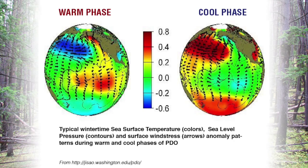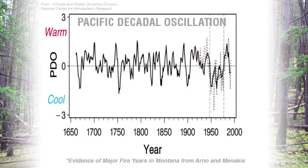Quite the opposite when we experience a cool phase: northern Pacific ocean temperatures are warm, which supports a high pressure system that circulates clockwise, drawing cold air down across Montana from Canada. If we look at Pacific Decadal Oscillation and its influence on our forests, here's a graph showing the last 450 years of climatic variability across the northwestern United States.